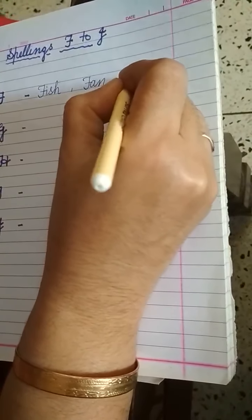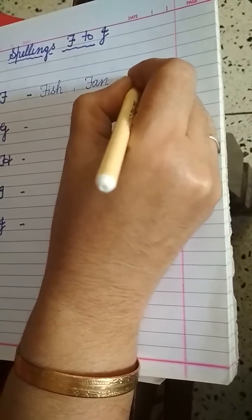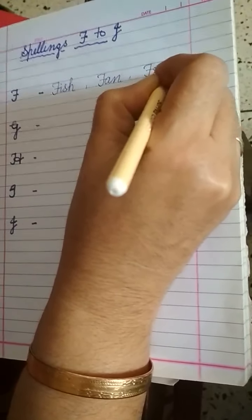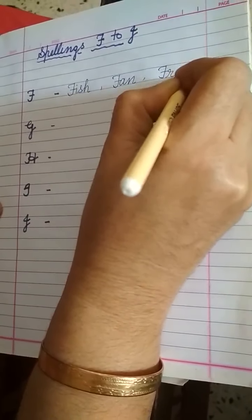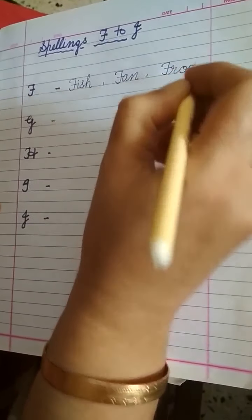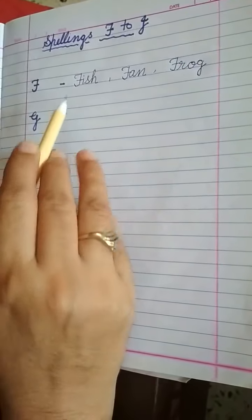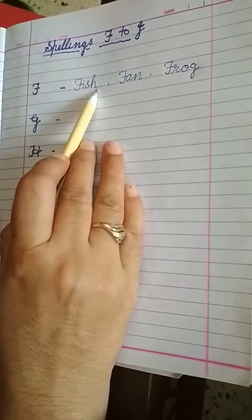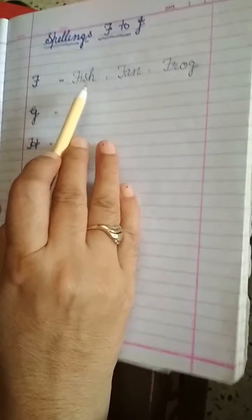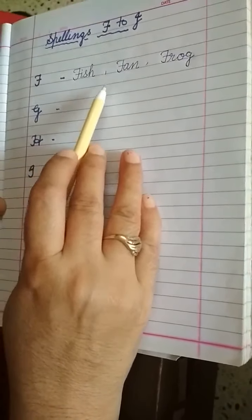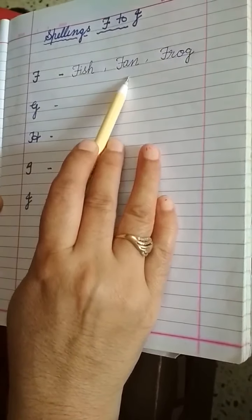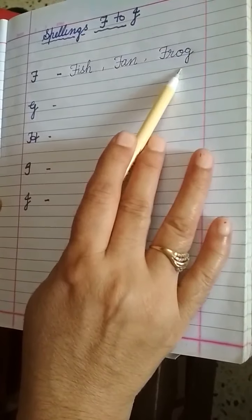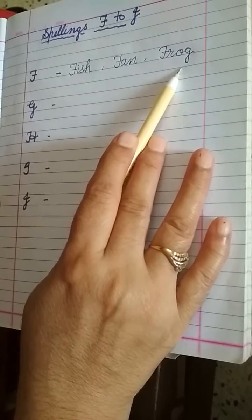And third is frog. F-R-O-G. F-I-S-H, fish. F-A-N, fan. F-R-O-G, frog.